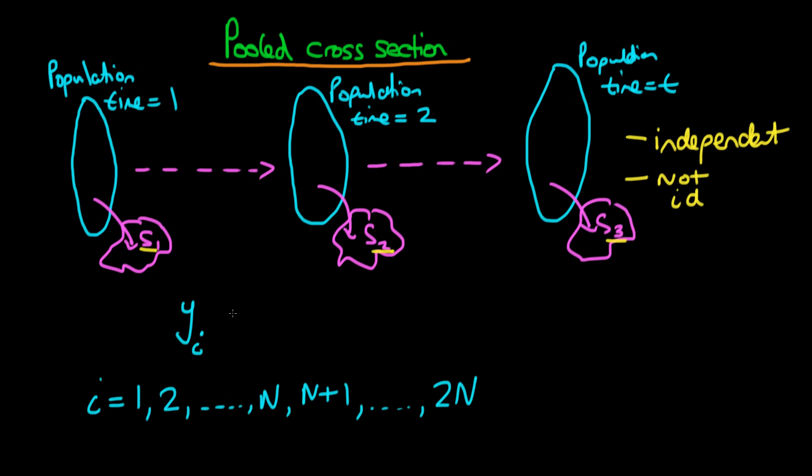We might think that this dependent variable is related to some constant alpha plus some beta 1 times a dummy variable, where this dummy variable delta is equal to 1 if the time period equals 2 and 0 if the time period equals 1. So I'm going to call it delta 2i, where delta takes on a value of 1 if that individual is sampled from time period 2 and 0 if they're sampled from time period 1.